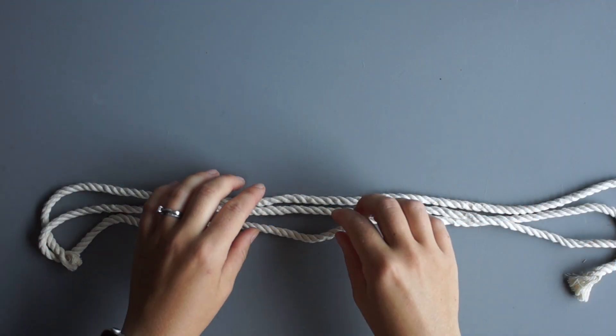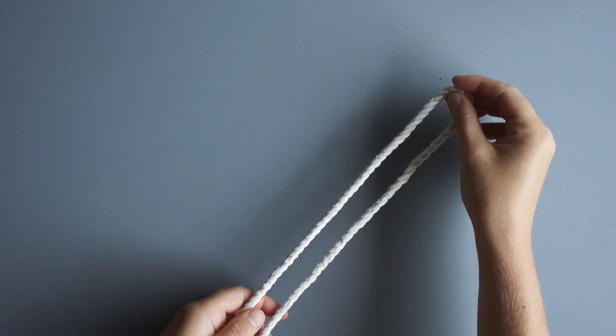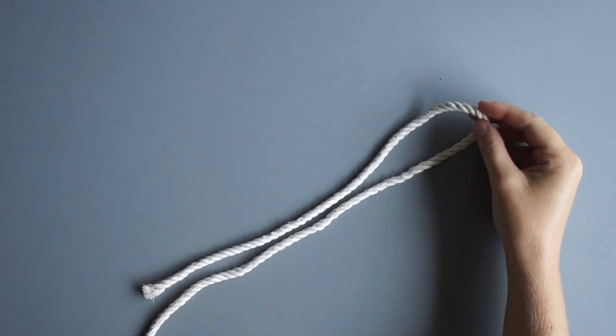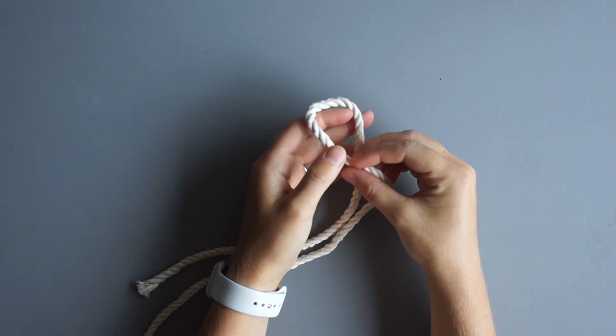Cut a piece of 6mm rope that is 6 feet in length. Working close to one end of the rope tie a slip knot so that the tail end that you would pull to undo the knot is the long end.